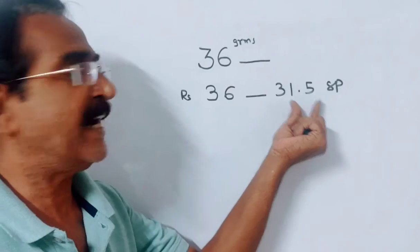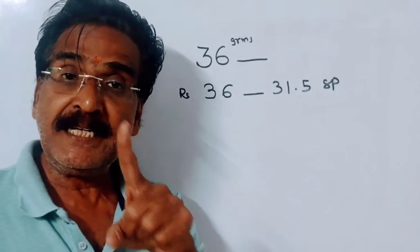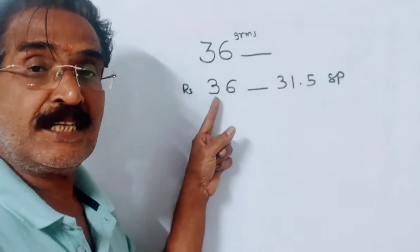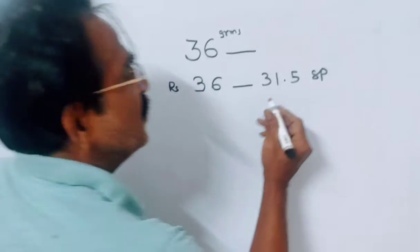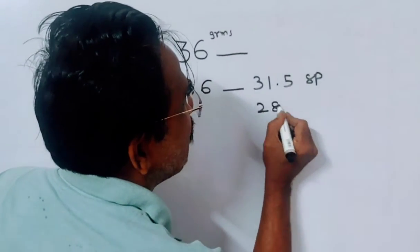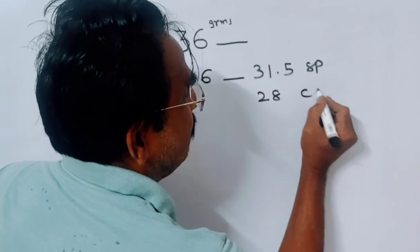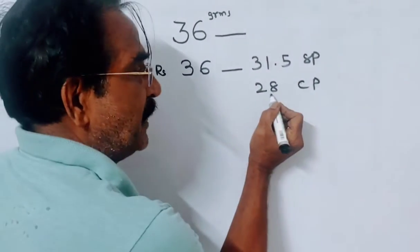So he wants to sell his goods at this price. But friends, here he is not giving 36 grams. He is giving only 28 grams. So 28 grams is his cost price. 28 grams means 28 rupees is his cost price.